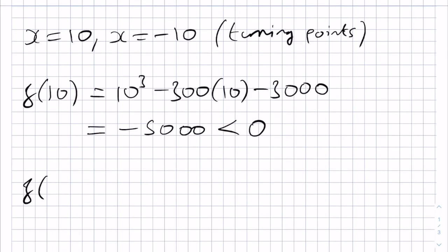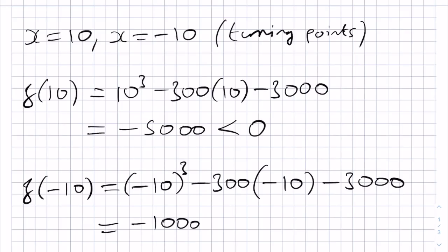Then if we look at f(-10), this would be (-10)³, so -1000, and then -300 times -10, and then -3000. This takes the value -1000, which is also negative.